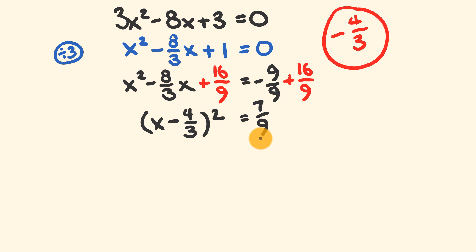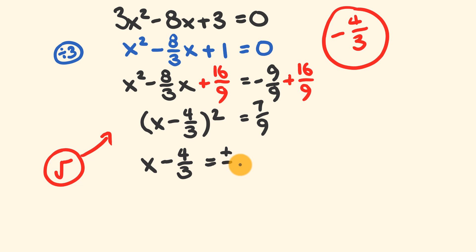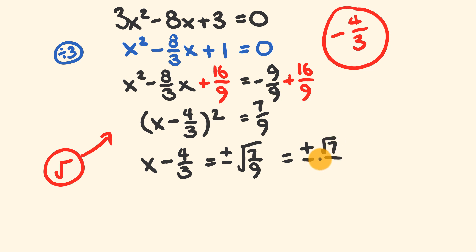Now we're almost done. We take the square root of both sides. On the left, the square root of x minus 4 over 3 squared cancels the square, leaving x minus 4 over 3. On the right, we get plus or minus the square root of 7 over 9. We can simplify this: the square root of a fraction equals the square root of the numerator over the square root of the denominator — so plus or minus root 7 over the square root of 9, which is 3.